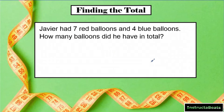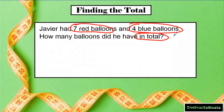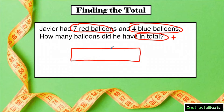I'm just going to focus on the word problem here. You're going to use a part-whole model when you're trying to find the total. It says: Javier has seven red balloons and four blue balloons — how many does he have in total? I'm bringing things together, so my part-whole model would have two parts. The seven red balloons — let's make that part seven and put 'red' up here — and the four blue balloons, we put 'blue' right here.